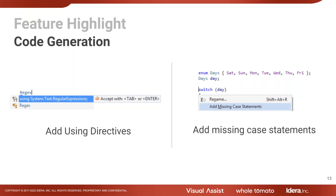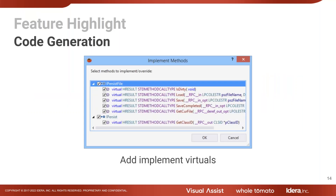We can automatically throw in missing case statements. These tools raise the question of how do you find out we have them? It's one thing to show they exist, but how do you know you can add missing case statements or use add using directives? Another favorite feature is Implement Methods — when you create a new class and inherit from a base class, this gives you a list of everything you can override, lets you search it, and implements it for you.